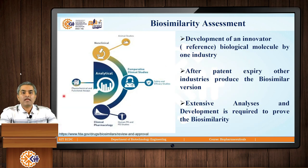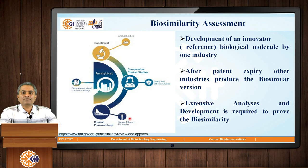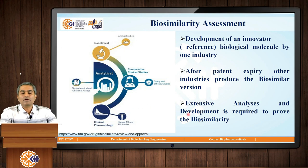The second important quadrant is the preclinical or non-clinical animal studies. The third one is comparative clinical studies, that is human trials. And the fourth one is clinical pharmacology, that is all the testing on humans with respect to drugs — pharmacokinetics and pharmacodynamics, that is how drugs behave in the body. Finally, the functional assays of that molecule also have to be performed and the characterization will be completed.